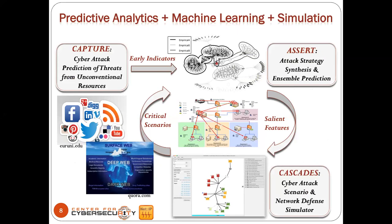Hopefully I've convinced you there are real challenges. We as humans want to be able to anticipate, forecast, predict, and simulate. Let me show you what we have done. The three systems presented are Capture, Assert, and Cascades. Capture is a forecasting and warning system that forecasts a few days to a week ahead based on unconventional signals. Assert makes assertions about critical behaviors based on collections of alerts — divide and conquer. Cascades generates synthetic simulated data, extrapolating scenarios for what-if analysis.